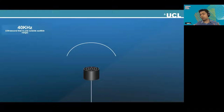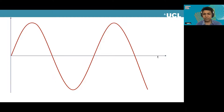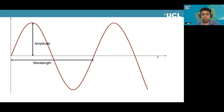Everything I'm talking about today uses ultrasound — a sound that is just outside the audible range, 40 kilohertz to be precise. If we have a single transducer and we turn it on, it's going to emit a spherical wavefront that disperses everywhere. Let's imagine this is your wave propagating through time — that's the amplitude of the wave, and that's the wavelength. When I say 40 kilohertz, I mean there are 40,000 waves in every second.